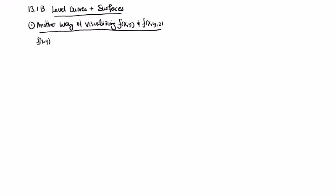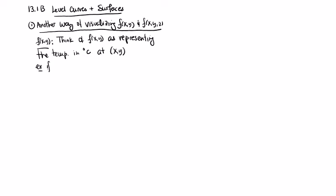For a function of two variables, we could think of it as representing something like temperature at a certain point. So we could think of f(x,y) as representing the temperature in degrees Celsius at a point (x,y). For example, if f(x,y) = x + y², we don't really know how to sketch that - it's not in our list of things we knew how to graph - but we could still use it.